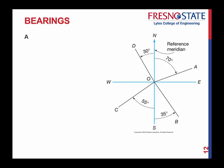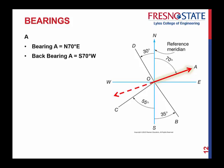Let's look at some back bearing examples. Point A has a bearing of north 70 degrees east. Back bearings are very simple to calculate: if we have north 70 degrees east and want to go the opposite direction of northeast, just change your direction to south 70 degrees west. The magnitude stays the same — it's just opposite directions, one northeast, the other southwest.